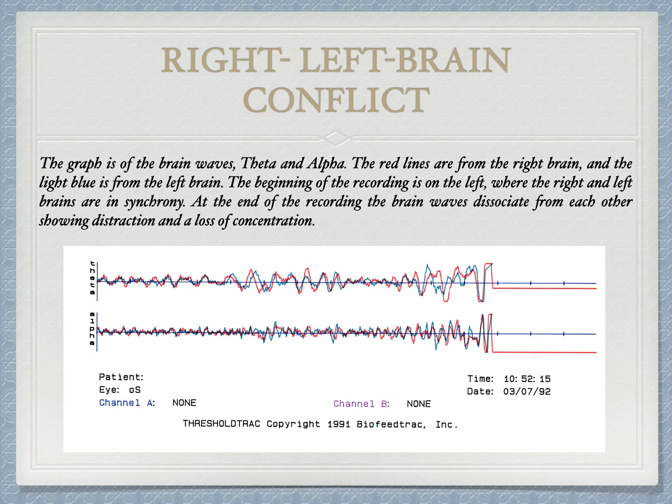We're going to look at the brainwaves introduced in the brainwaves and parallel processing podcast. The graph shows just two of the waves: alpha and theta. The red lines are for the right hemisphere and the blue lines for the left hemisphere. After a short time, the blue and red lines start to separate — the two halves of the brain are out of synchrony — due to anxiety and a subsequent loss of concentration.